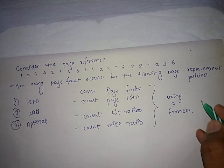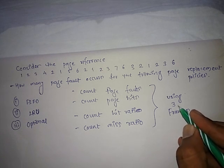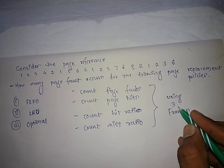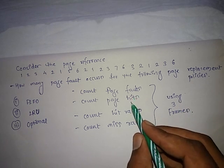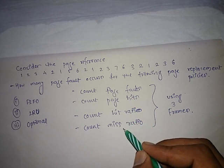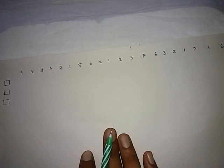The page reference string is given, which will replace certain pages. The frame size is 3, which represents the memory partitions of primary memory. We have to find out the page faults, page hits, hit ratio, and miss ratio. I have organized the concept like this — the page string and page frames are 3.